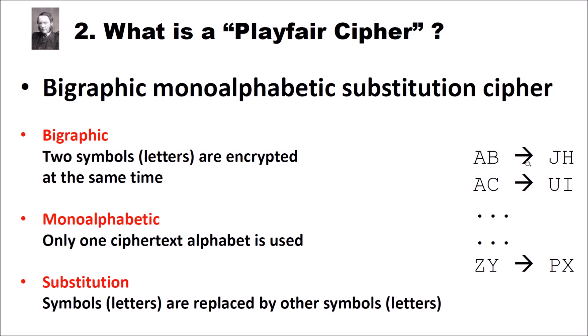The Playfair cipher is monoalphabetic, meaning that only one ciphertext alphabet is used. We already have a video on simple monoalphabetic substitution ciphers, so if you're interested in details, have a look at that video. In contrast, polyalphabetic ciphers switch to another ciphertext alphabet after encrypting each letter — an example is the Vigenère cipher, which we also have a video about.